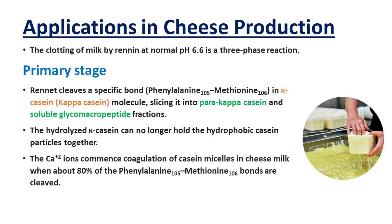The clotting of milk by rennet at normal pH 6.6 is a three-stage reaction. In the primary stage, rennet cleaves a specific bond in the kappa-casein molecule, slicing it into para-kappa-casein and soluble glycomacropeptide fractions. The hydrolyzed kappa-casein can no longer hold the hydrophobic casein particles together. Then the calcium ions commence coagulation of casein micelles in cheese milk when about 80% of the bonds are cleaved.